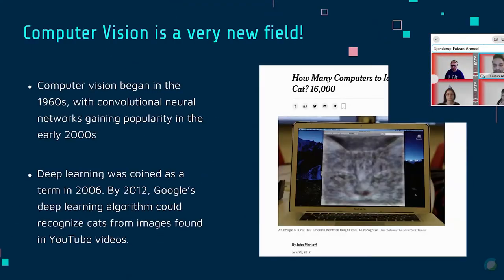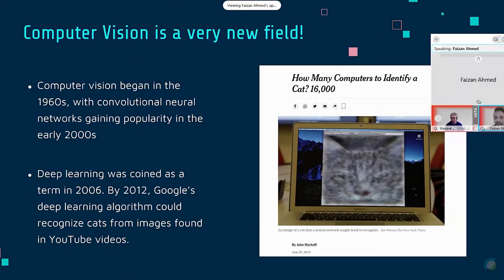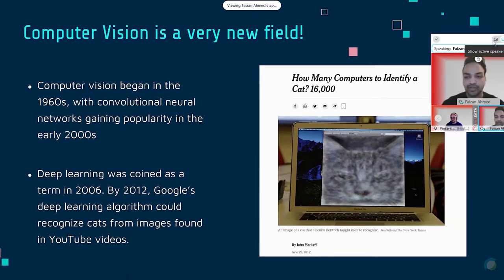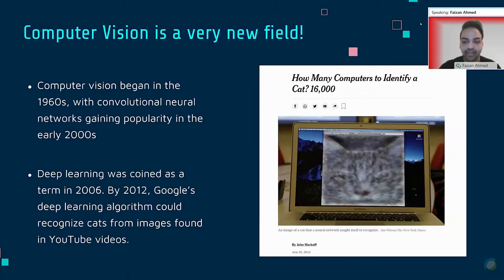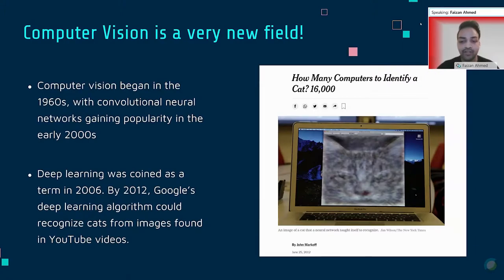I want to emphasize that everything in this presentation is very new. Computer vision actually started to take shape as a field in the 1960s, and it didn't really start gaining traction until the early 2000s when convolutional neural networks were emerging, which I will get into later in the presentation.